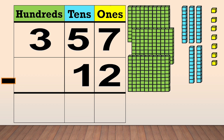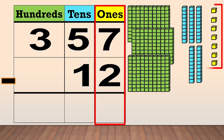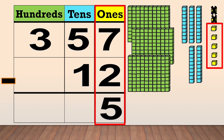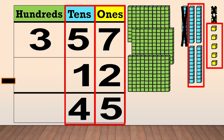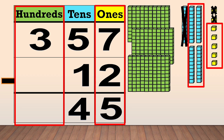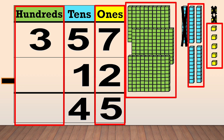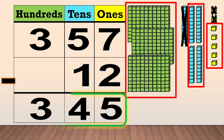Next, we subtract the ones. Seven minus two equals five. Then, we subtract the tens. Five minus one equals four. Now, we subtract the hundreds. We have three hundreds, but there is no number in the hundreds column. That means there is nothing to subtract, so we bring down three. Our final answer is three hundred forty-five.